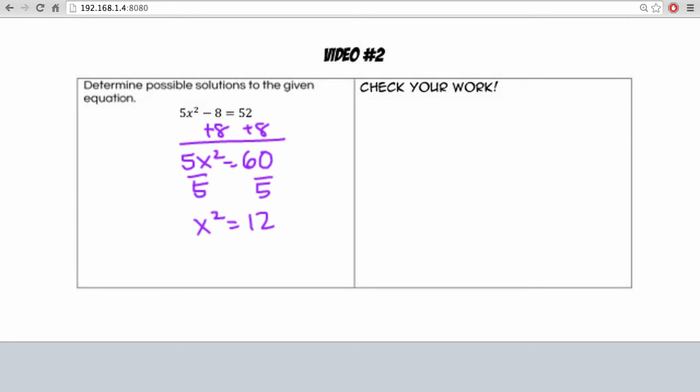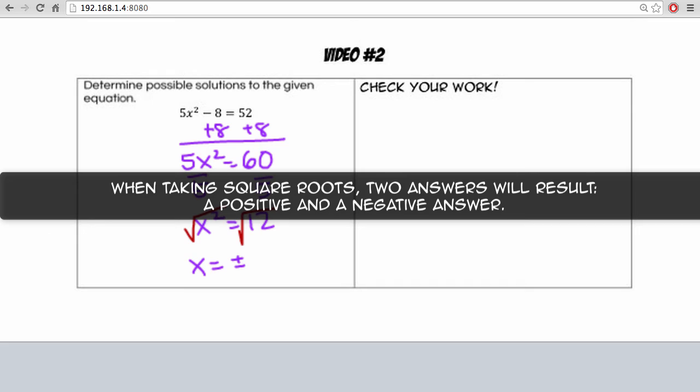Now we know to undo a square, we must take the square root. So we'll get x to be equal to plus or minus square root of 12.